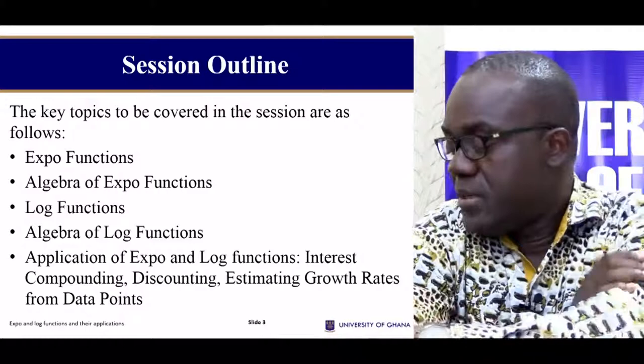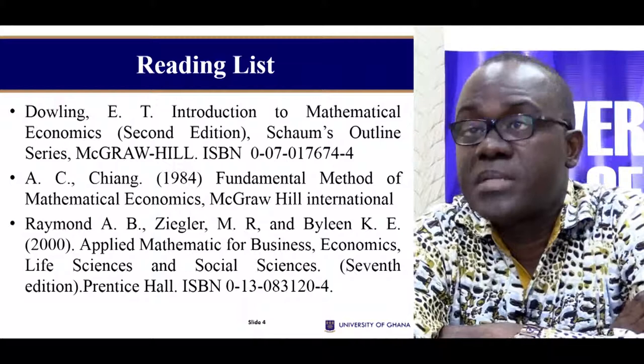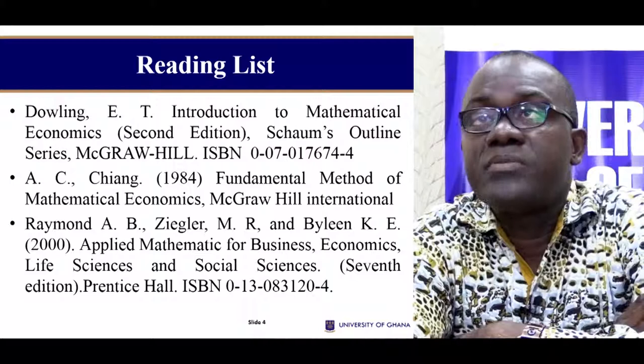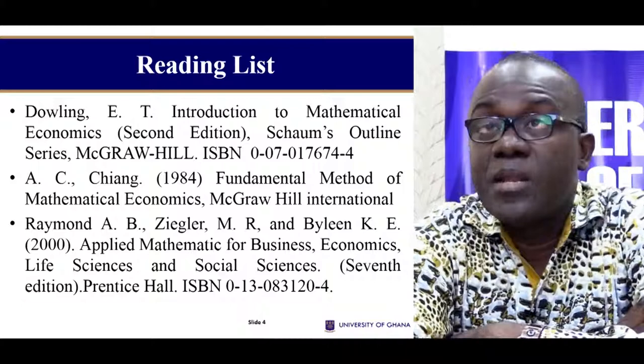Applied Mathematics for Economics is a very old discipline and any good book will help you, but I recommend these three readings which I find very important: Dowling, Alpha Chang, and Raymond and Ziegler. They can all be found in the library of the Department of Economics and in the main library of the university.